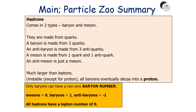Hadrons come in two types: baryons and mesons, and both are made from quarks. A baryon is made from three quarks; an anti-baryon from three anti-quarks. A meson is one quark and one anti-quark, so an anti-meson is just the meson itself with quark and anti-quark swapped. Hadrons are much larger than leptons. They're all unstable except for protons, because all baryons eventually decay into a proton. Only baryons can have a non-zero baryon number: baryons have a baryon number of one, anti-baryons minus one, mesons have a baryon number of zero, and all hadrons have a lepton number of zero.